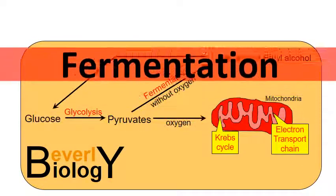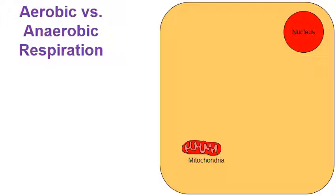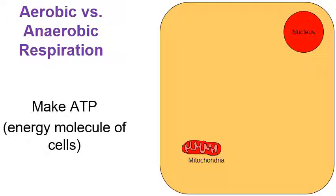Today's topic will be on fermentation. We're going to start by making sense out of this diagram right here. As we go through this presentation we're going to talk about a variety of cellular and chemical reactions, and the whole purpose of these reactions is to make a molecule called adenosine triphosphate, ATP. This is the energy molecule needed by our cells. How cells make ATP depends on a few factors — that's what we're going to talk about: aerobic versus anaerobic respiration.